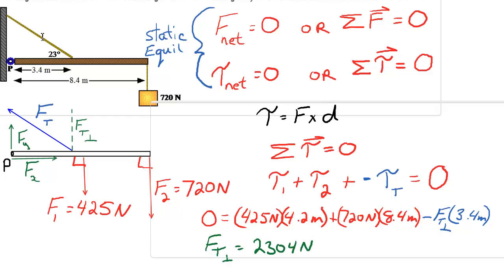Now, that doesn't answer my question. I want to know what the tension is in the cable, not the perpendicular component. So I now know this piece. It's 2,304.